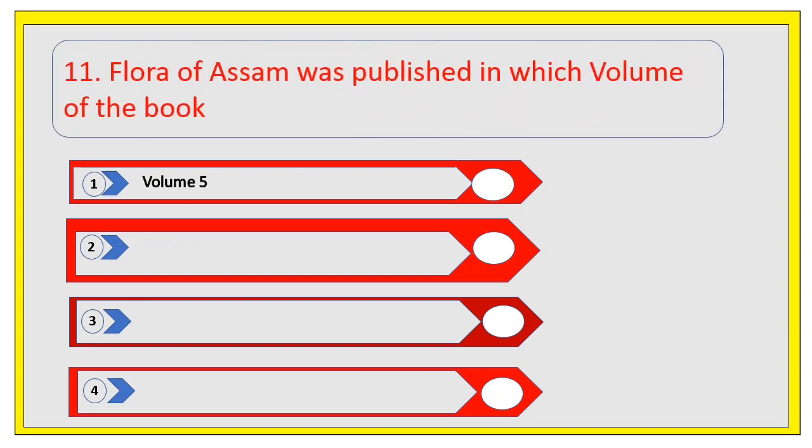Flora of Assam was published in which volume of the book? Options are volume 5, volume 6, volume 7, and volume 10. The right answer is volume 5. Flora means it is a book published on the biodiversity of environment of Assam.